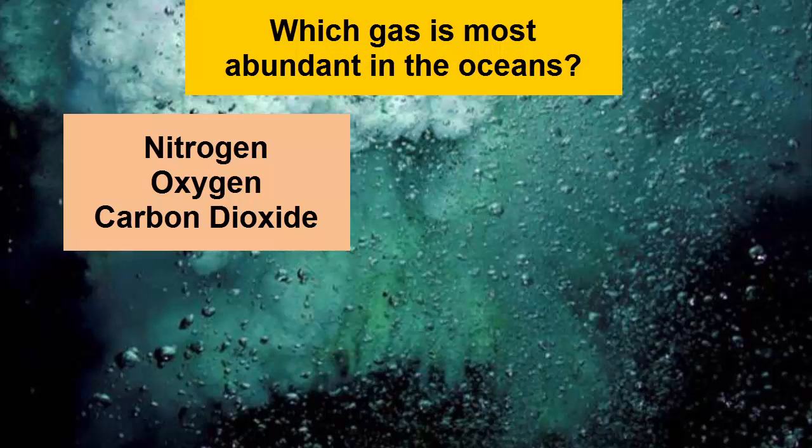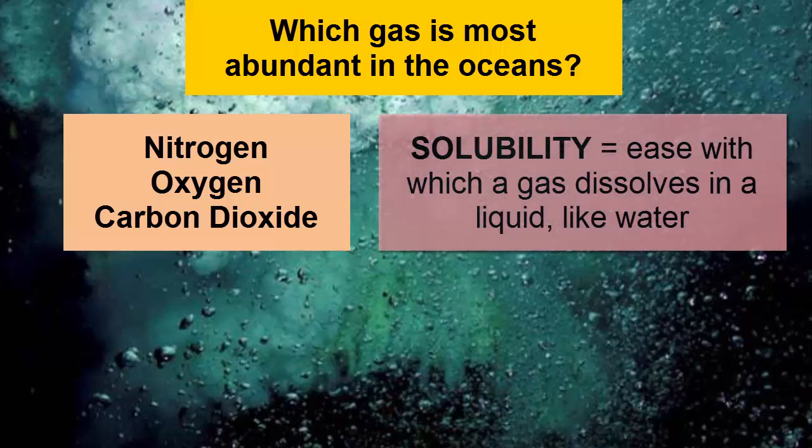Now let's ask: which of our three major gases is found in the highest abundance in the ocean? Solubility is the term we use to describe a gas's ease in being dissolved in a liquid. Every gas has a different solubility, and that solubility can change as the liquid's characteristics change, like temperature and salinity.